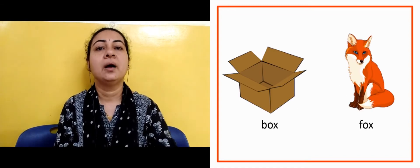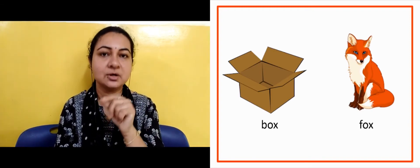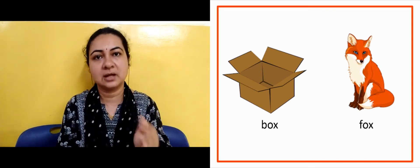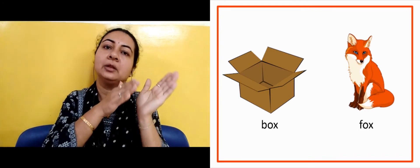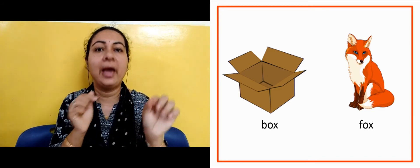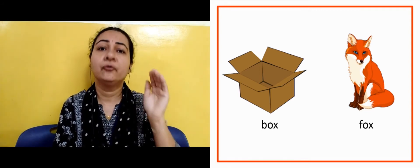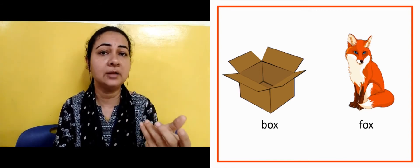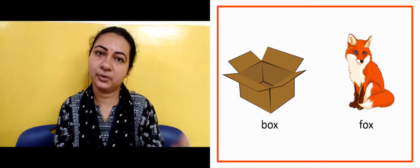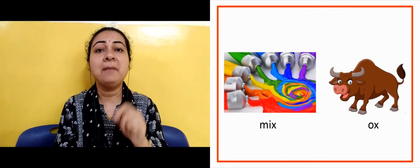The next slide is showing us 'box'. Notice that the letter X is at the end here. It is not necessary that the vocabulary word starts with the letter — the sound can appear at the beginning, middle, or end. In 'box', X comes at the last: B-O-X, box. Another one is 'fox': F-O-X, fox. The X sound is heard at the end.